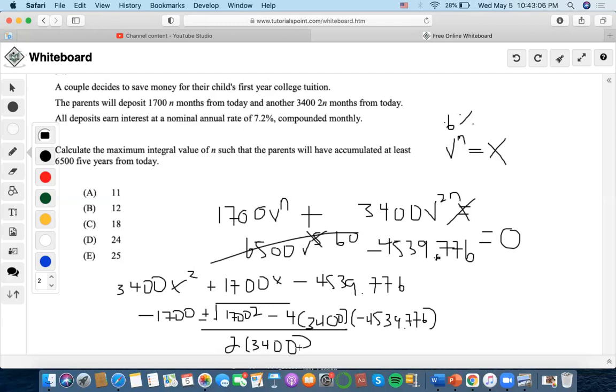Now let's solve. B squared is 1700 squared. That's a huge number. Minus 4 times 3400 times negative 4534.776.